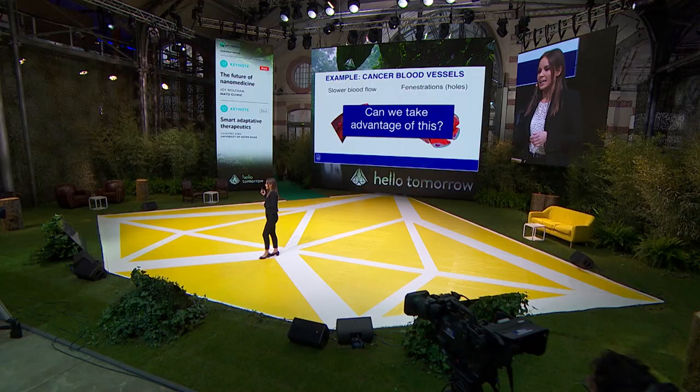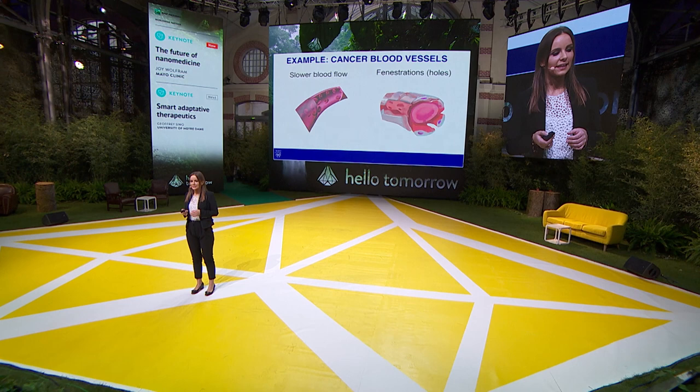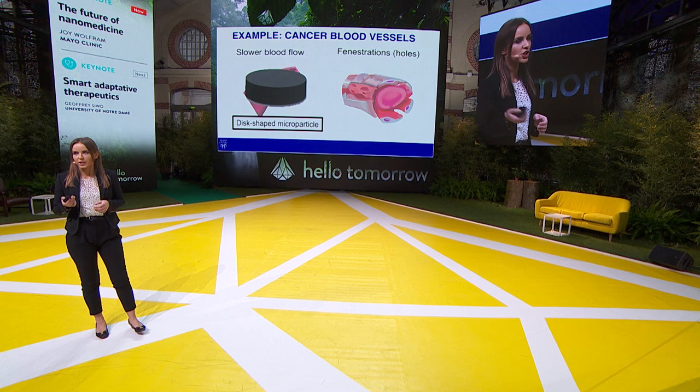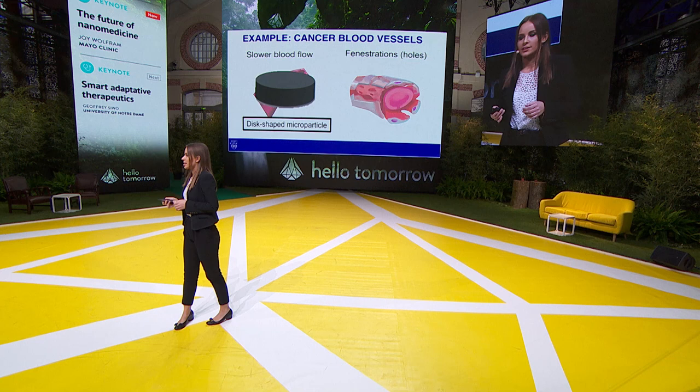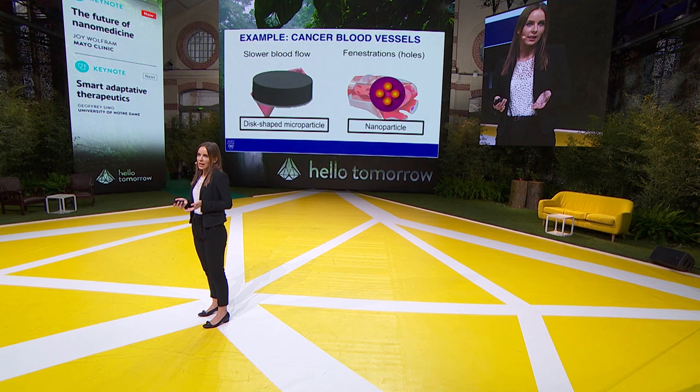To take advantage of the slower blood flow, we designed disc-shaped microparticles about 1,000 nanometers in diameter — an example of a larger nanoparticle. To take advantage of the fenestrations, we designed smaller nanoparticles. In the next few slides I'll illustrate how each of these particles interacts with blood vessels.